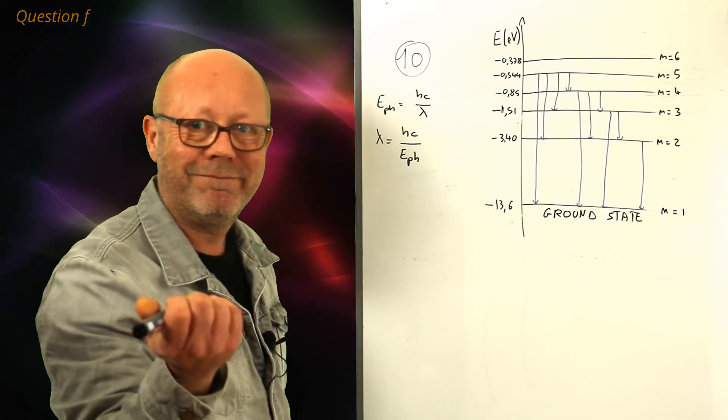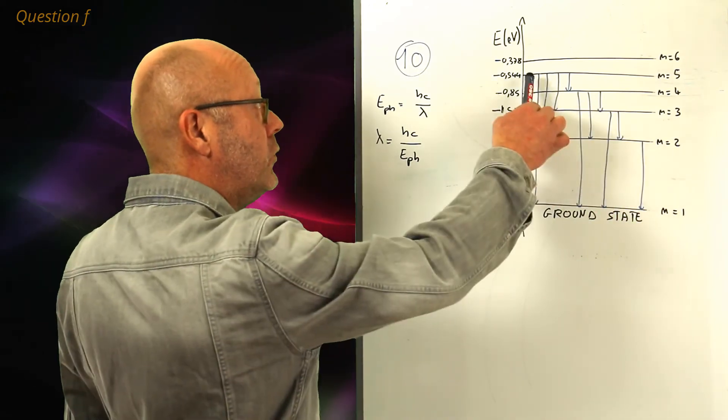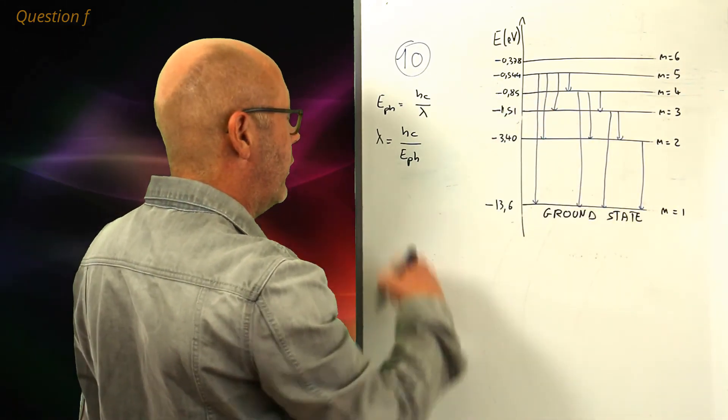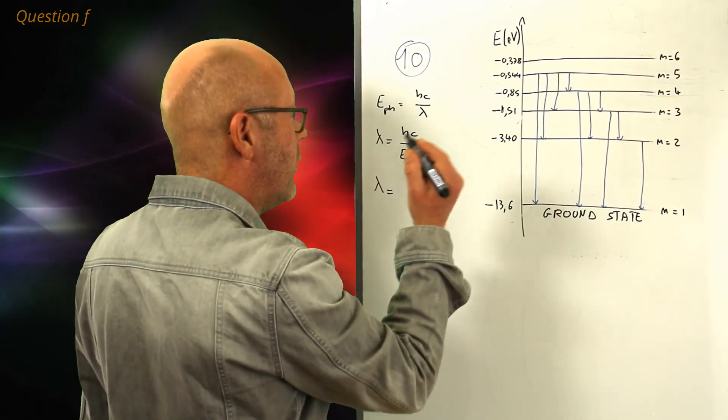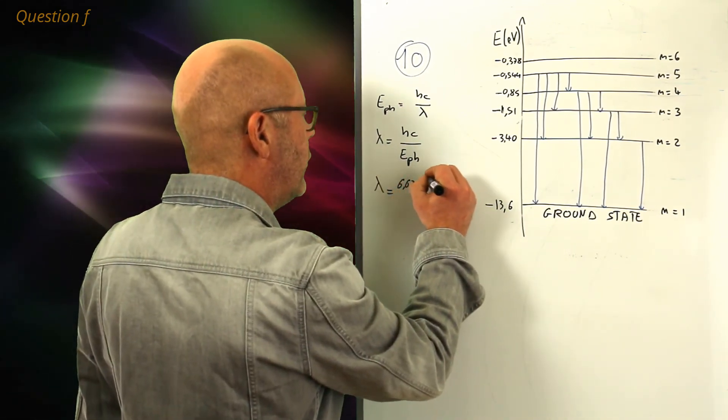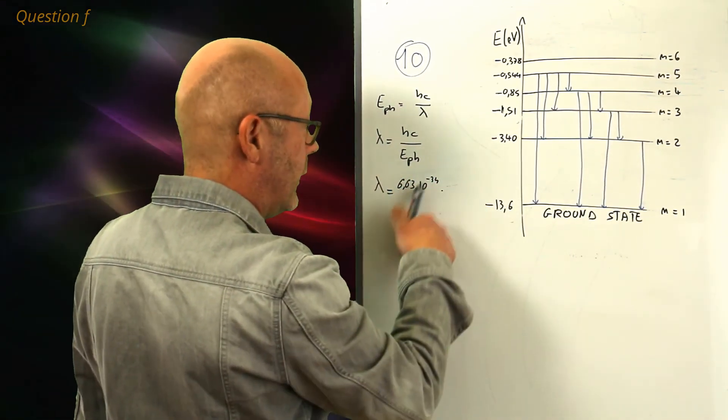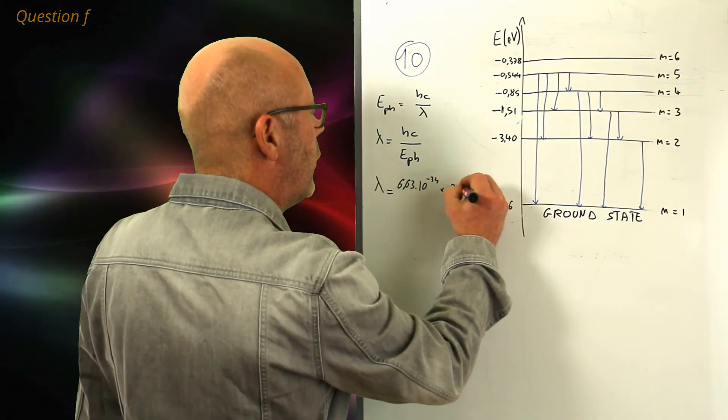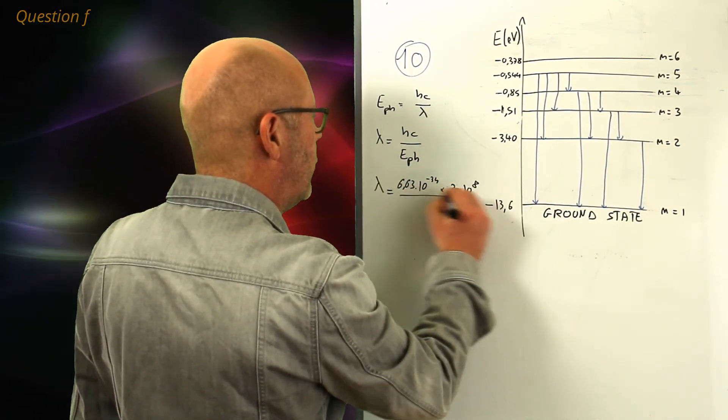In joules, what is the energy of the photon? Well, it corresponds to the difference of energy between these levels. So, lambda... Well, let's plug in the numbers straight away. 6.63 for the Planck constant, by 10 to the minus 34, multiplied by 3 to 10 to the 8 for the speed of light.